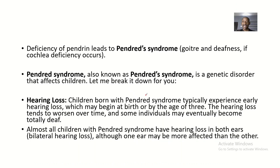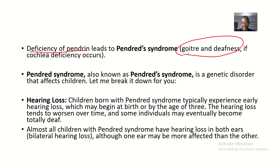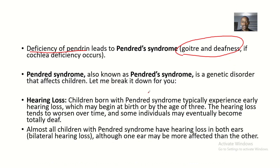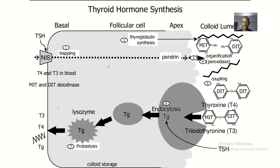In Pendred Syndrome we have an enlarged thyroid gland. Deficiency of pendrin leads to Pendred Syndrome, and Pendred Syndrome is basically two disease conditions: swelling of the thyroid gland, and deafness.